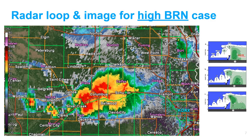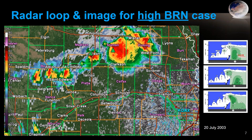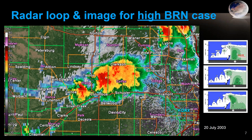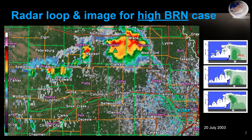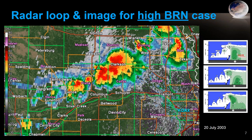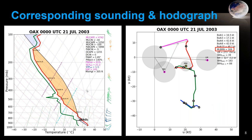In the high BRN case, we see supercells that don't last very long — they dissipate, then another one forms and also dissipates. It's a multicellular supercell case where you don't have one single storm lasting a very long time. Looking at the Omaha sounding for this environment, we see ML CAPE of 4,700 — quite large — and the mixed layer BRN of 169, which is in that area where you're really buoyancy-dominated. That's consistent with the shorter-lived storms. The bulk six wind difference was nearly 43 knots, with plenty of low-level shear.